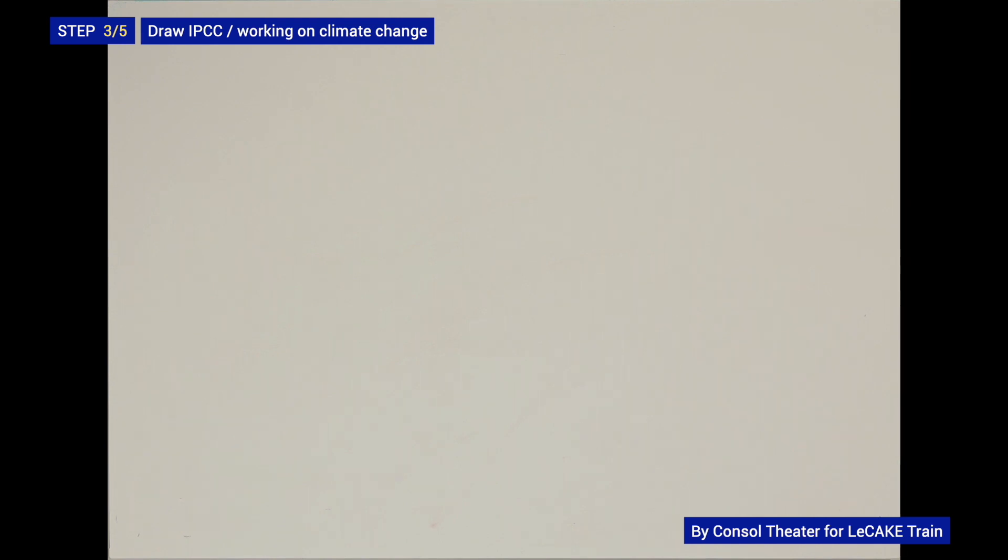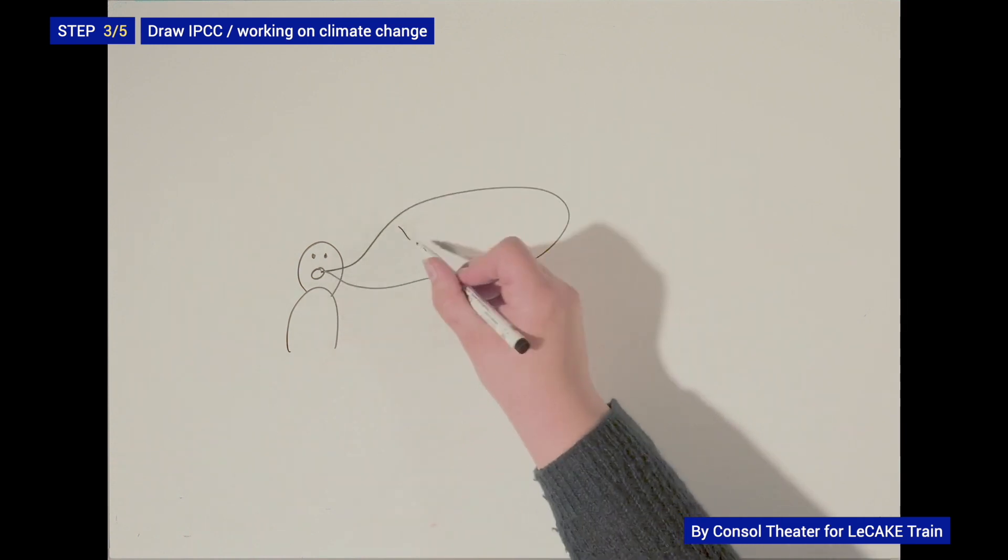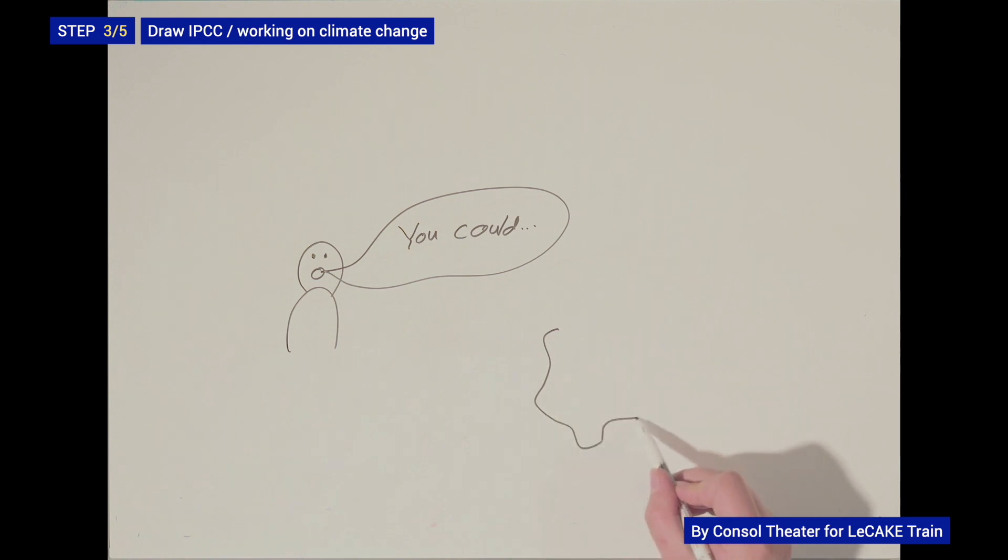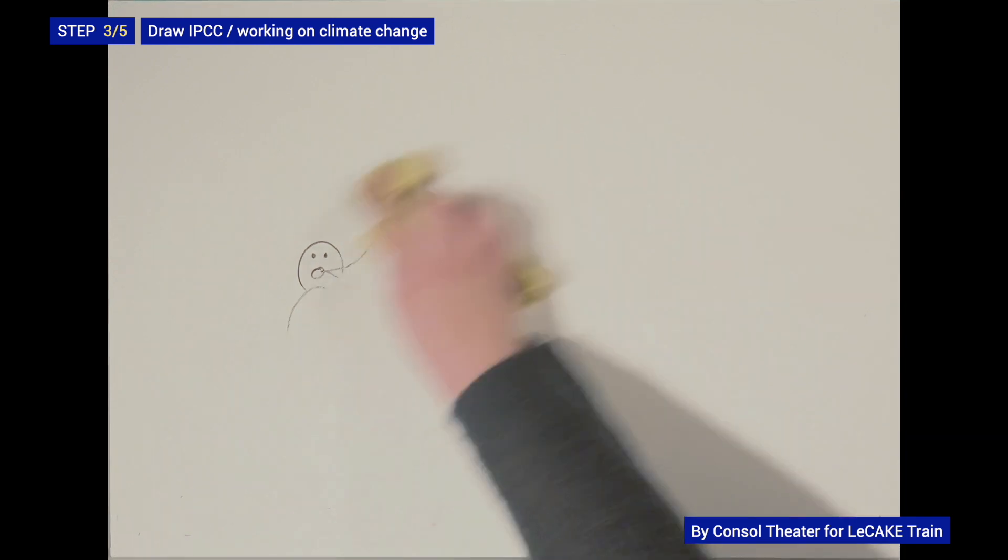Well, the IPCC will never dictate governments which climate policy they have to implement. It only provides them with ideas of how to address global warming and explains to policymakers the consequences of further climate change. For example, I spoke earlier about the 1.5 degree goal. The IPCC has described exactly what global warming of 1.5 degrees means for life on Earth and how this can still be achieved.